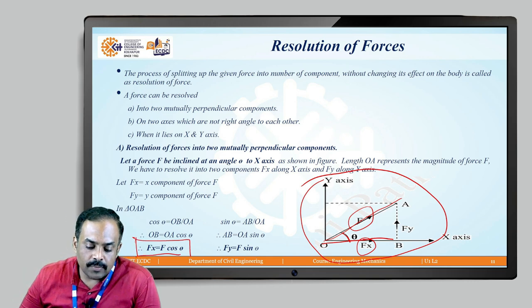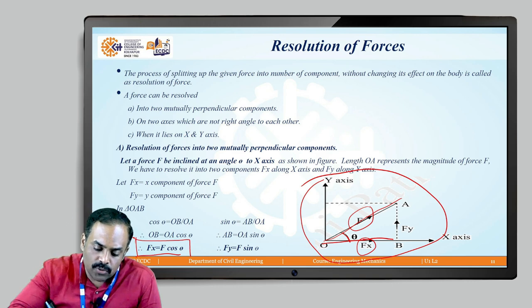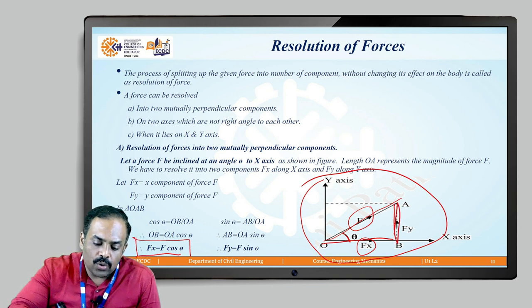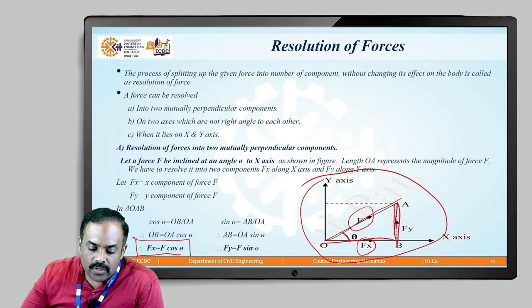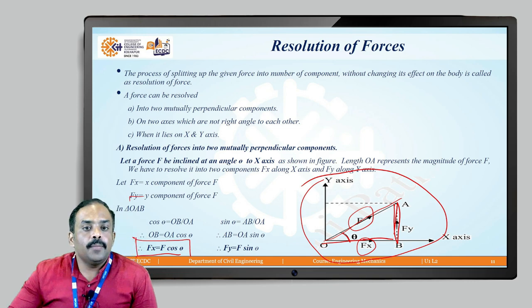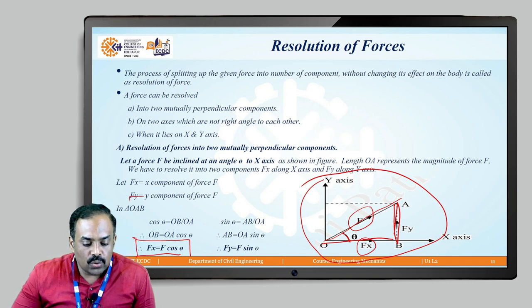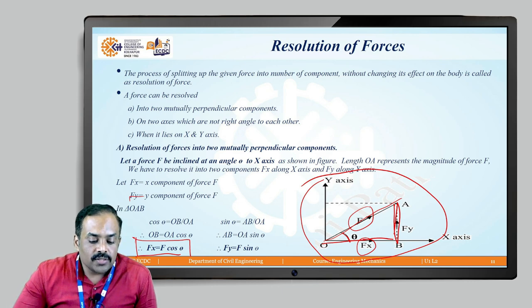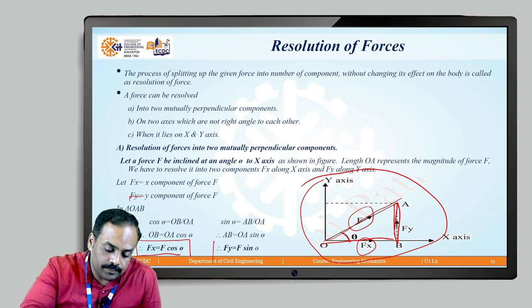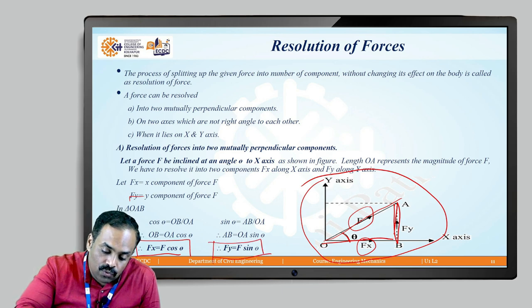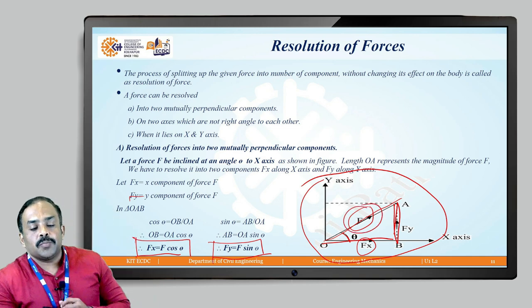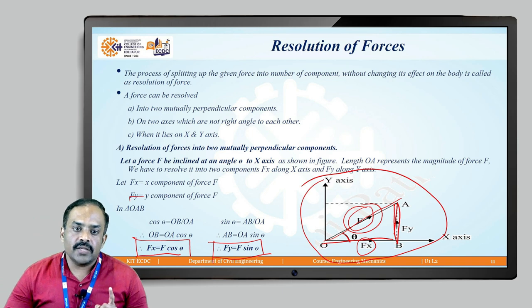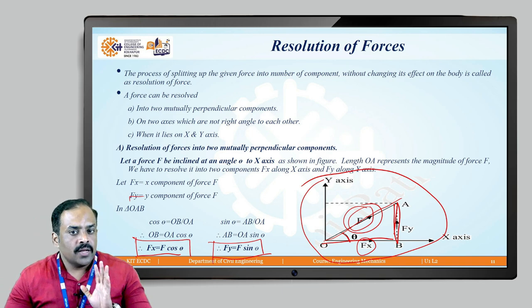For sin theta, sin theta equals opposite over hypotenuse, which is AB over OA. Here AB is the Fy component and OA is F. Therefore, Fy = F sin theta. So the force F has been split into two parts: Fx = F cos theta and Fy = F sin theta.